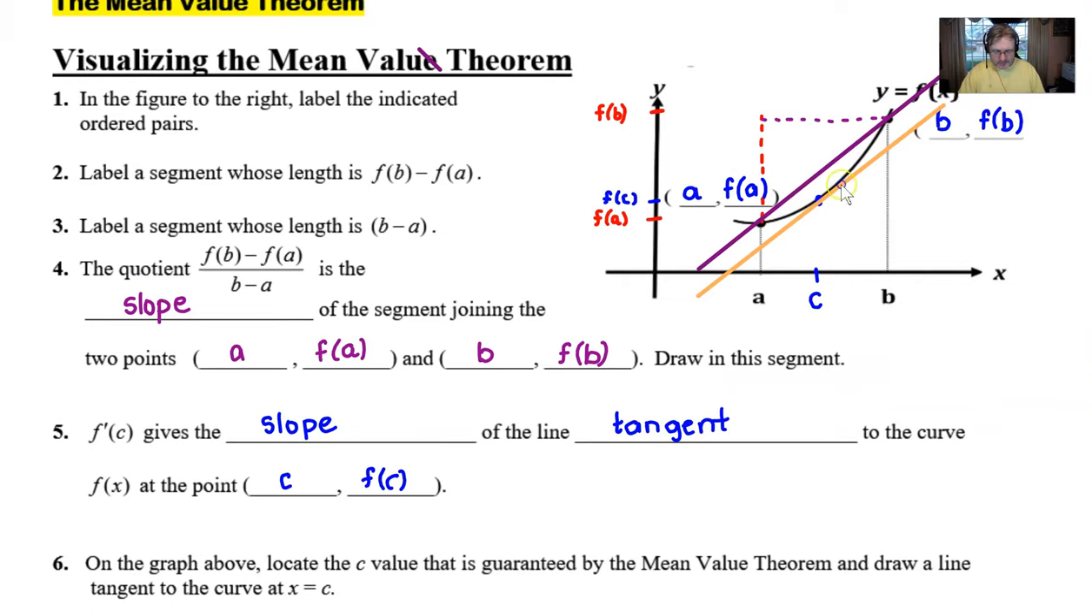Now it says to locate the c value that's guaranteed by the mean value theorem, which we kind of already did in order to answer our part five question. And they want us to go ahead and try to draw that in. So once again, I'll use my line tool. You can use a straight edge if you have access to one. And I'm going to draw this in a bright orange color. It would look maybe something like this. Again, I'm kind of eyeballing it. It's tough to draw tangent lines, but I think I did a fairly good job because it looks like I've got the tangent line and this purple secant line sharing a pretty clear relationship.